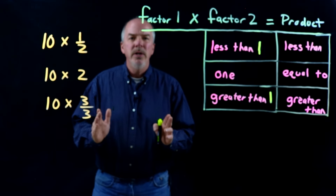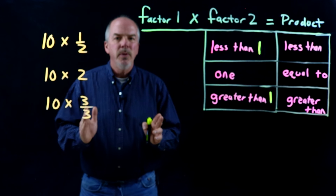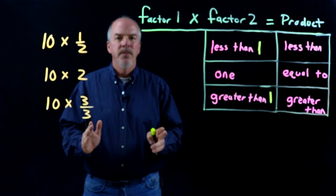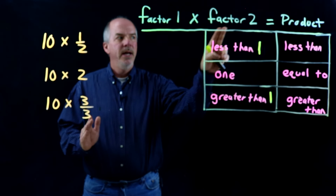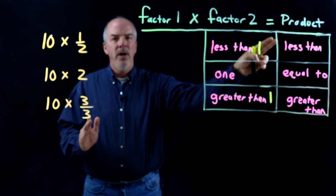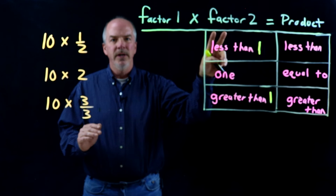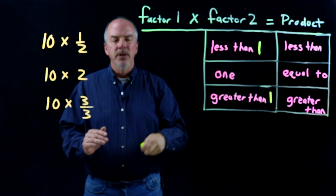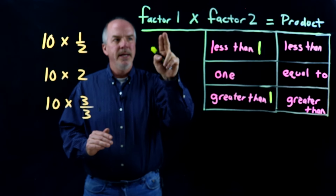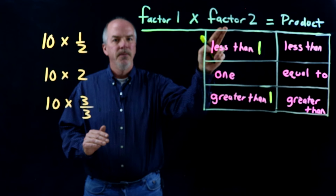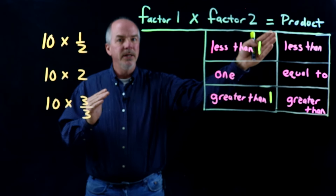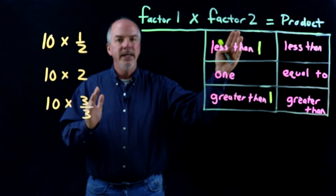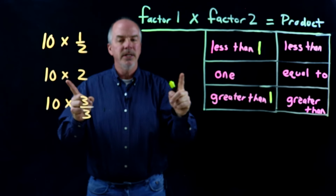Okay, hello. Interpret multiplication as scaling, and we're going to do that by looking at two factors and then looking at the product that results from those two factors. If we multiply a number times a number, we'll be able to interpret the product — interpret the answer — without doing any calculation. Let's look at some examples.